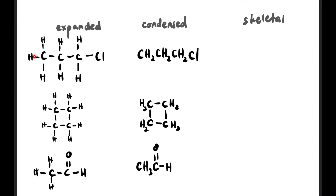For example CH3CH2CH2Cl: there are 3 carbons, so we draw a zigzag with 3 points. At the end where Cl is attached, we just add one more bond and write Cl — remember, Cl must be written out. Each vertex represents a carbon atom; hydrogen doesn't need to be shown as it's understood to be there automatically.